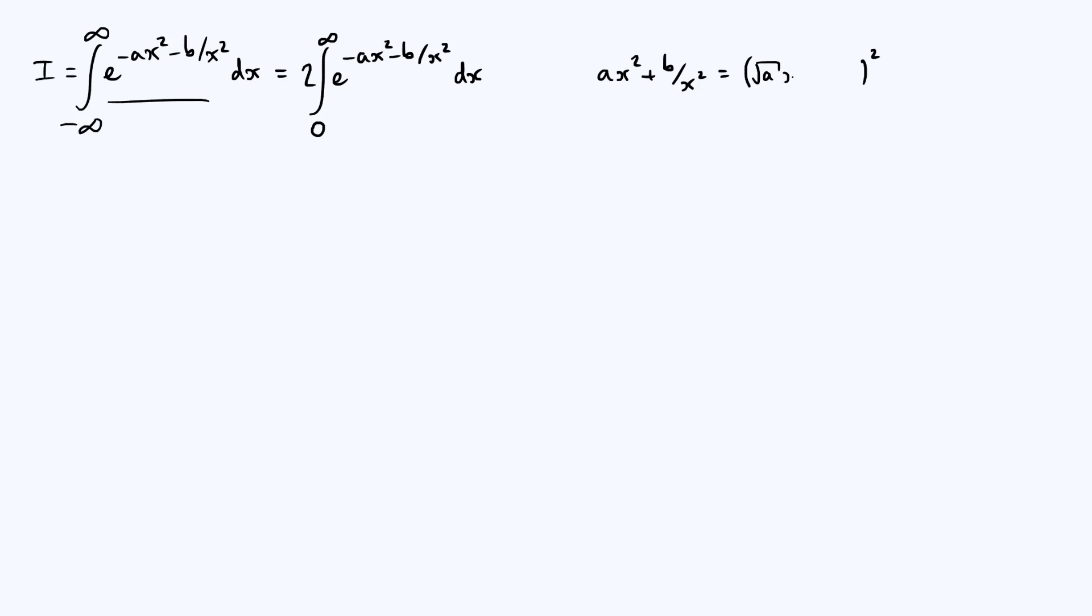You need a root a and then that's got to be times by x so that you get ax squared from that first term. You are also going to need similarly a root b over x term to give you that b over x squared term when you expand your squared brackets.